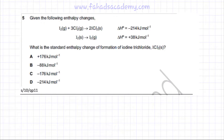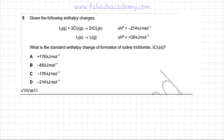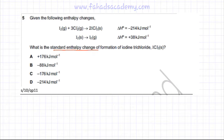This chemical energetics question is related to drawing the Hess cycle. You're given the following enthalpy changes: a reaction involving iodine gaseous, and another reaction where iodine solid is converted into iodine gaseous molecules, with the enthalpy change for that also given. You're being asked: what is the standard enthalpy change of formation of iodine trichloride, ICl₃ solid?